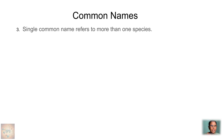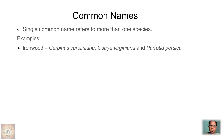The third drawback is that in some cases, a single common name refers to more than one animal or plant — one name to many species. For example, 'Ironwood' is a common name given to three different trees: Carpinus caroliniana, Ostrya virginiana, and Parrotia persica. All three different plants are commonly called Ironwood.